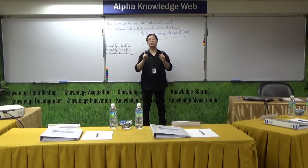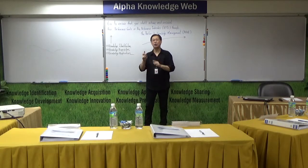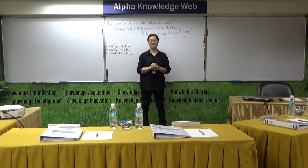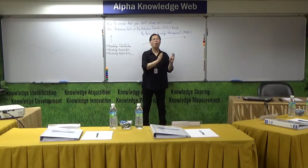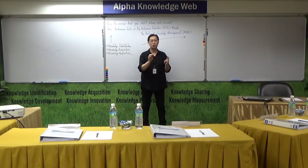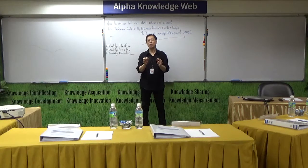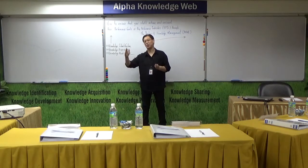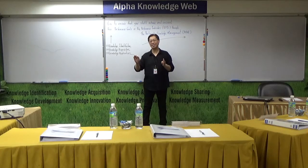In the context of this working definition, the word 'knowledge' includes two major components. The two components are: firstly, know-what, and secondly, know-how. Know-what refers to what we know and understand. Know-how, on the other hand, refers to what we do after we know, and what we apply. Know-how is also commonly referred to as skills.